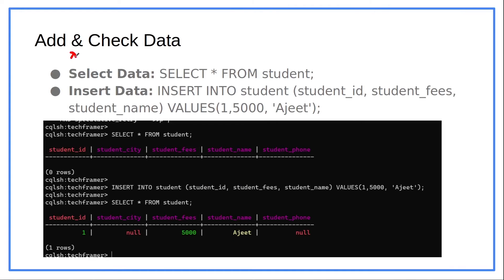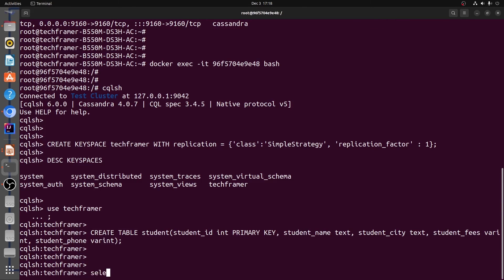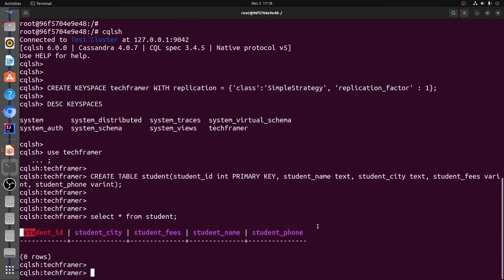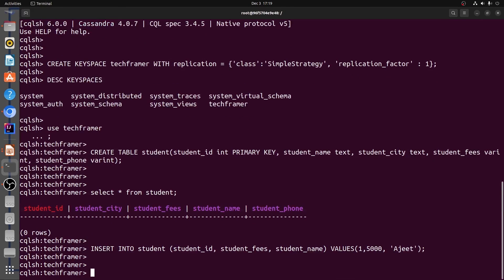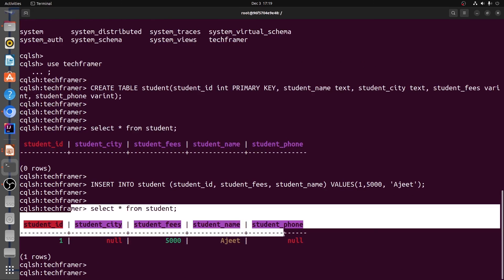The next step is to add some data and check if the data is present or not. To check the data, we can utilize a `SELECT` query: `SELECT * FROM student`. To insert the data, we use an `INSERT INTO` statement with the student table name, columns, and values. Let's go back to the terminal — let's type `SELECT * FROM student`. We can see there is no data as of now. Now let's type the insert query and add some data. Our data is inserted now. Let's check the data again using the select query. The data has been inserted successfully.